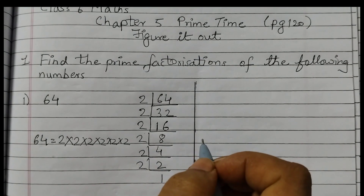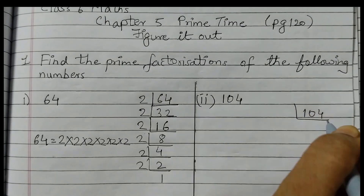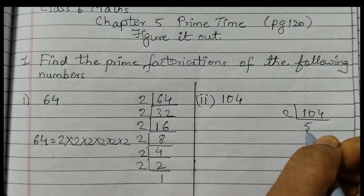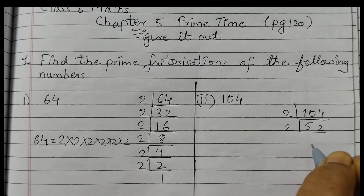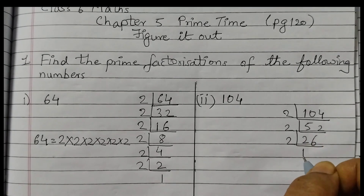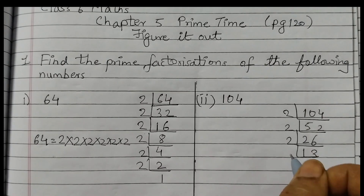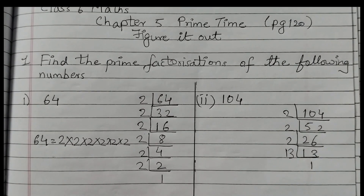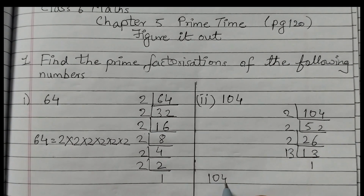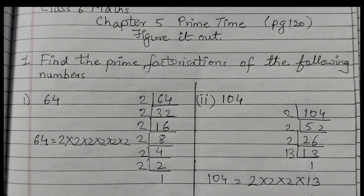Next one is 104. Same way we will do — divide by 2 first. 104 ÷ 2 = 52, 52 ÷ 2 = 26, 26 ÷ 2 = 13. 13 is a prime number so we stop. So 104 is equal to 2 × 2 × 2 × 13. This is the prime factorization of 104.